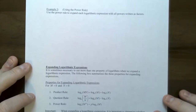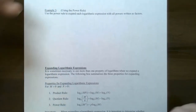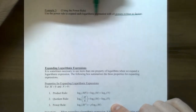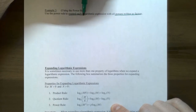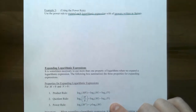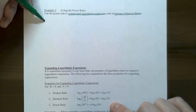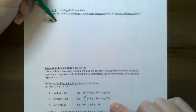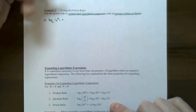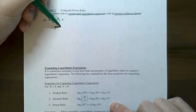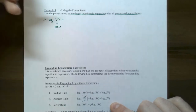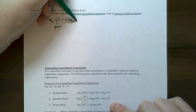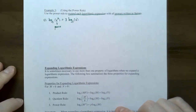Let's try example three — use the power rule to expand each logarithm expression with all powers written as factors (coefficients). Number one: log base five of x cubed. The argument is an exponential expression, so bring the power three to the front as a coefficient: three times log base five of x. We don't know what x is, so that's simplified completely.